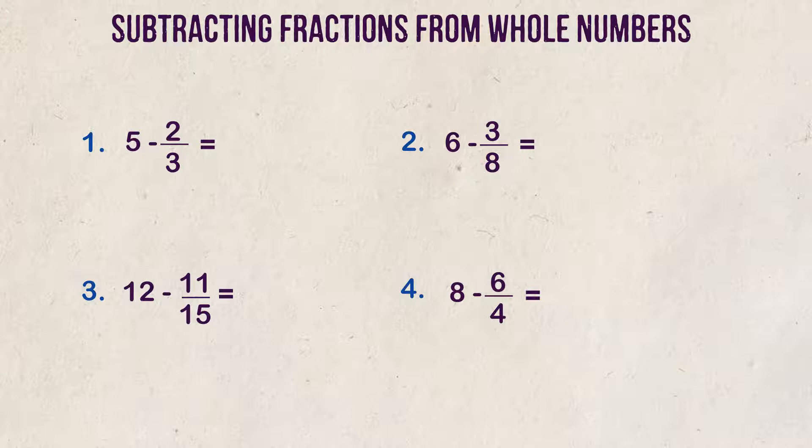Example 1. Subtract 5 minus 2 thirds. The first thing we're going to look at with subtracting fractions from whole numbers is we're going to change our whole number into a fraction itself. We do that by simply putting our whole number over 1. Let's change 5 to 5 over 1.